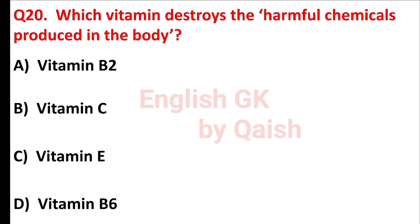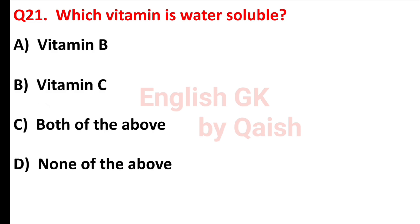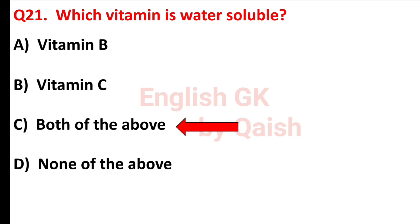Which vitamin destroys the harmful chemicals produced in the body? Answer is option C, vitamin E. Which vitamin is water soluble? Answer is option C, both of the above — vitamin C and vitamin B.